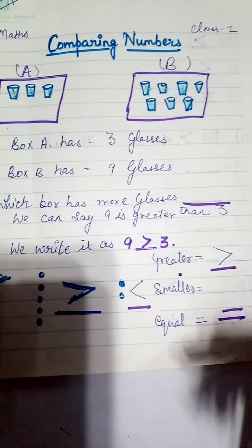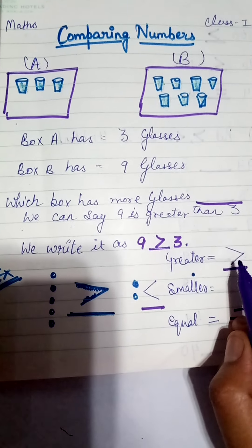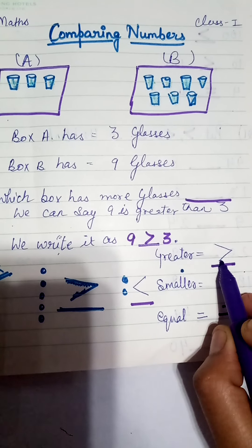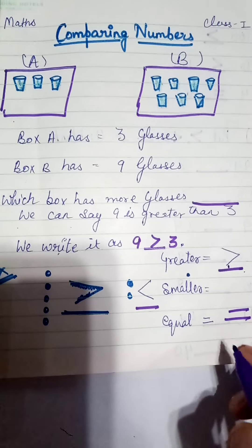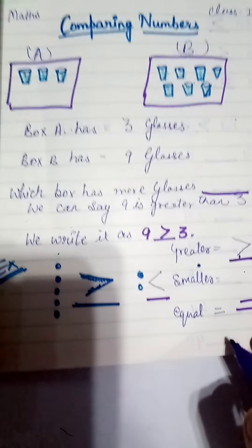First we will learn the signs of comparing numbers. This is the greater-than sign, this is the smaller-than sign, and this is the equal sign.